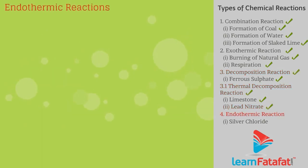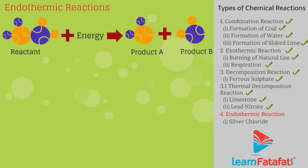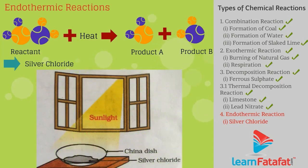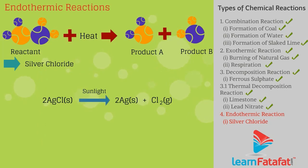Endothermic reactions: Reactions in which energy is absorbed are known as endothermic reactions. Example — take 2g of silver chloride in a china dish, note its white colour, and place the dish in sunlight for some time. White silver chloride turns grey in sunlight. This reaction is used in black and white photography: 2AgCl (sunlight) → 2Ag + Cl2.